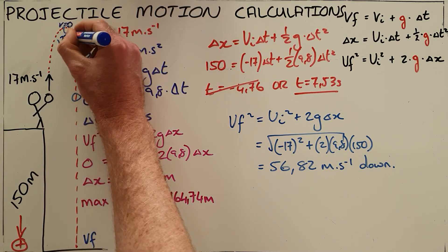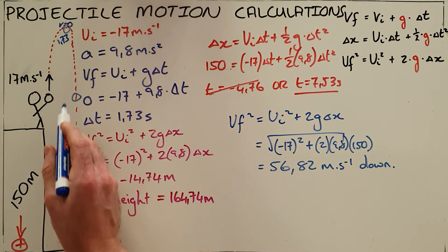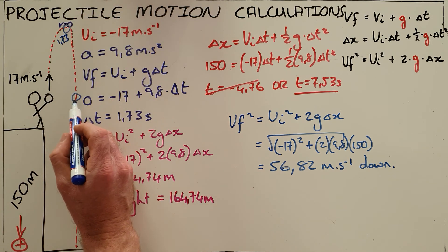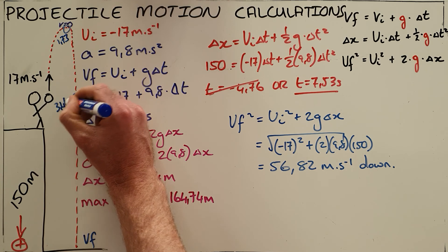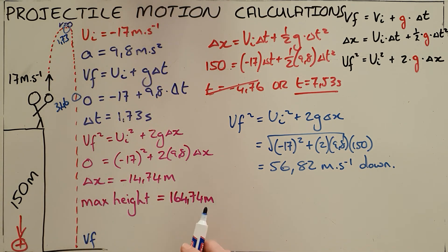So if we say it took 1.73 seconds to reach its maximum height, it would take another 1.73 seconds to reach its starting point, meaning a total of 3.46 seconds to reach the starting point. That is a given or a constant you may assume that in a test or exam.